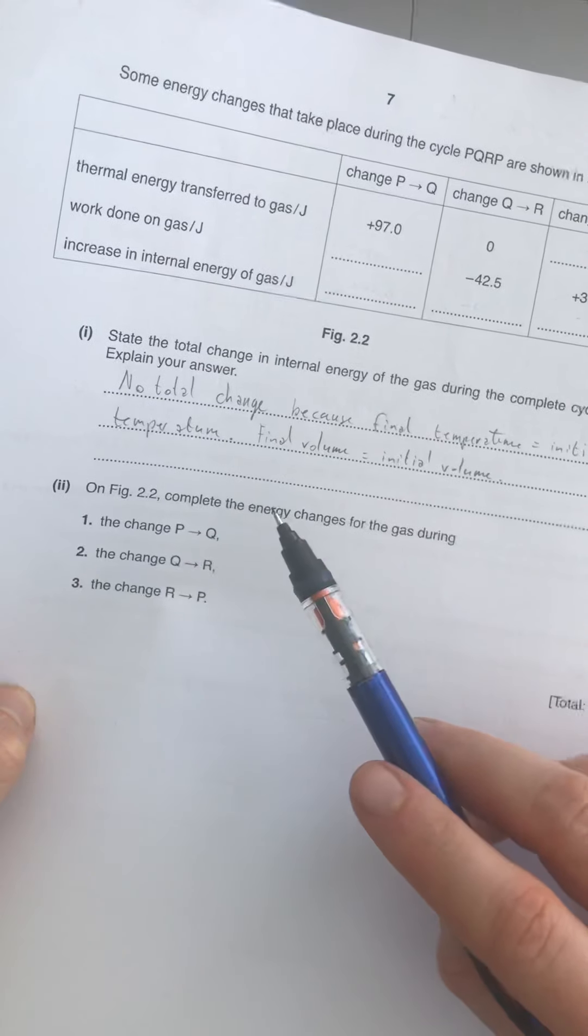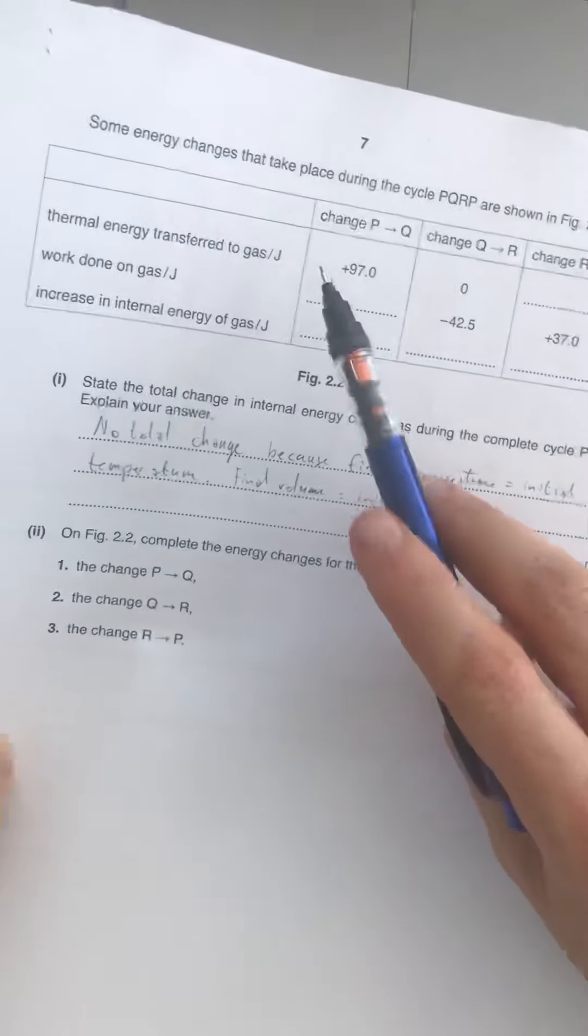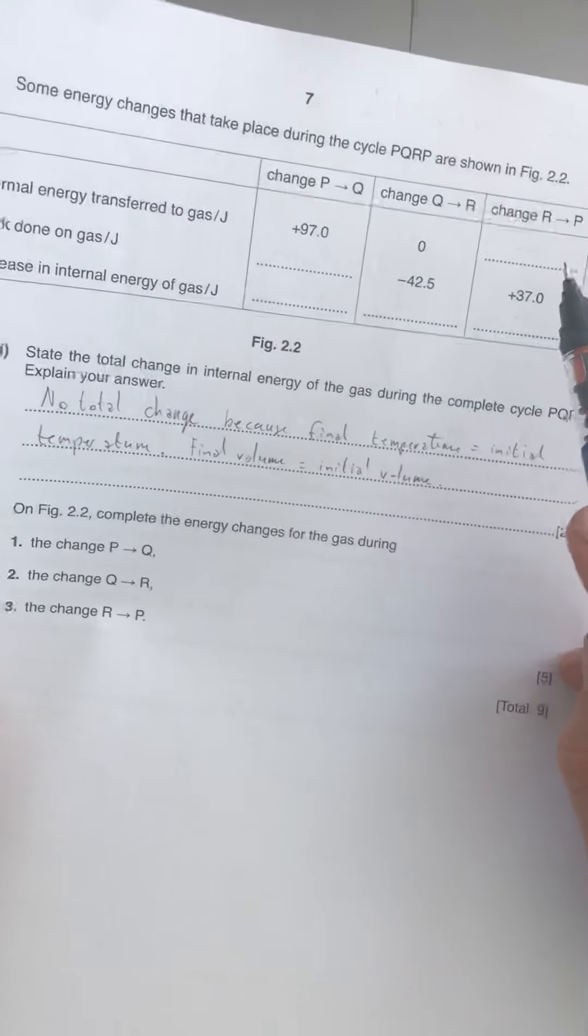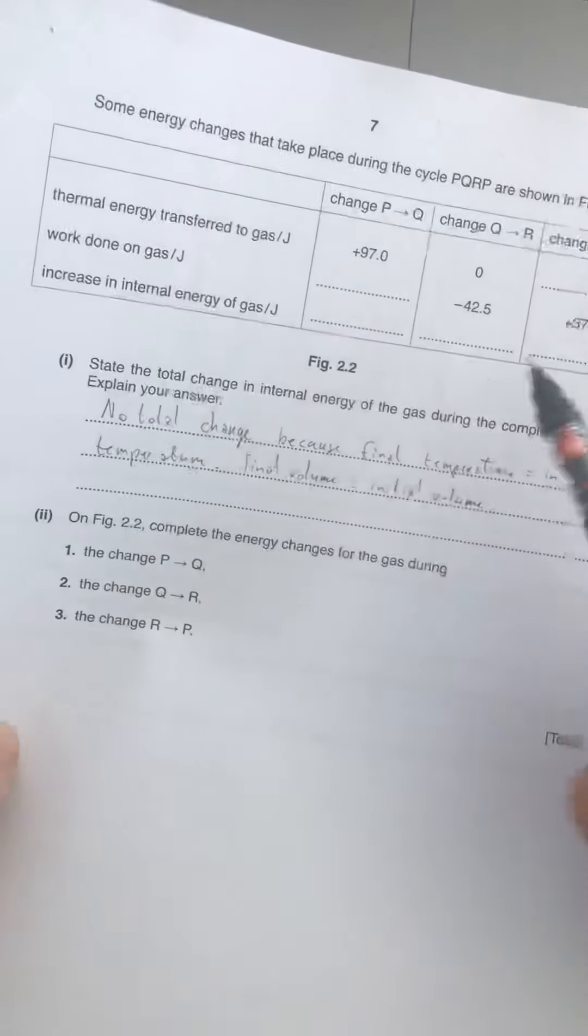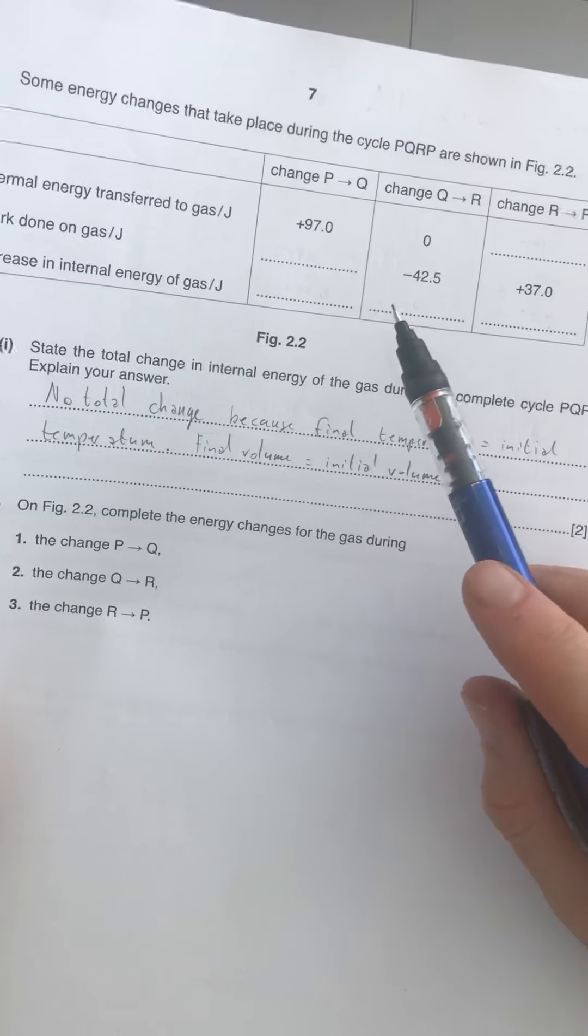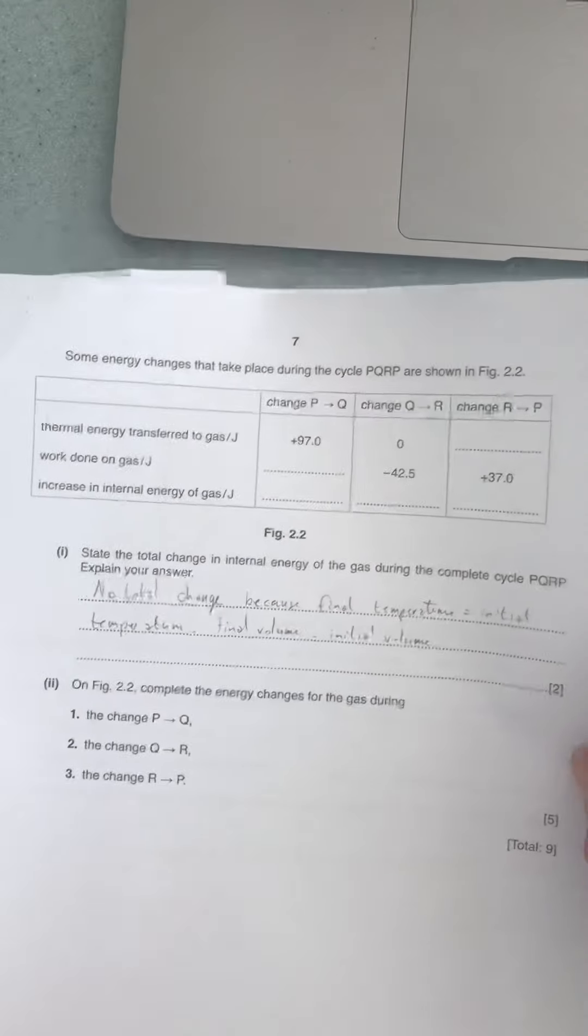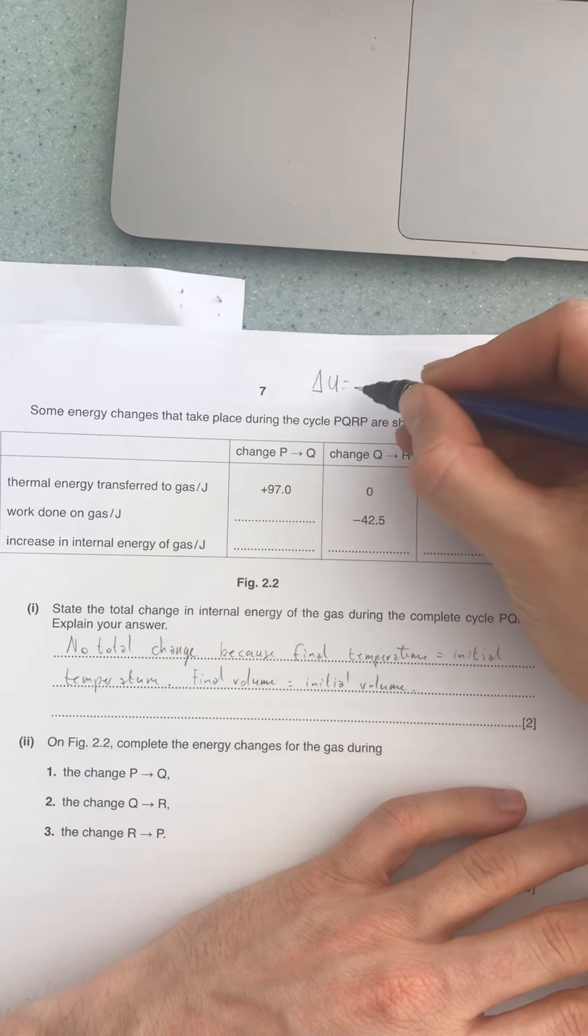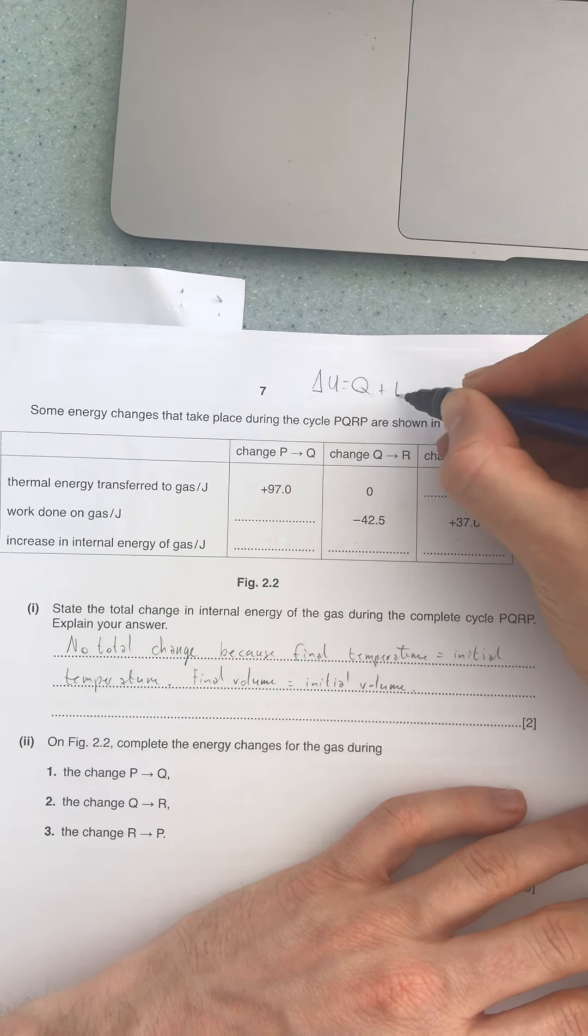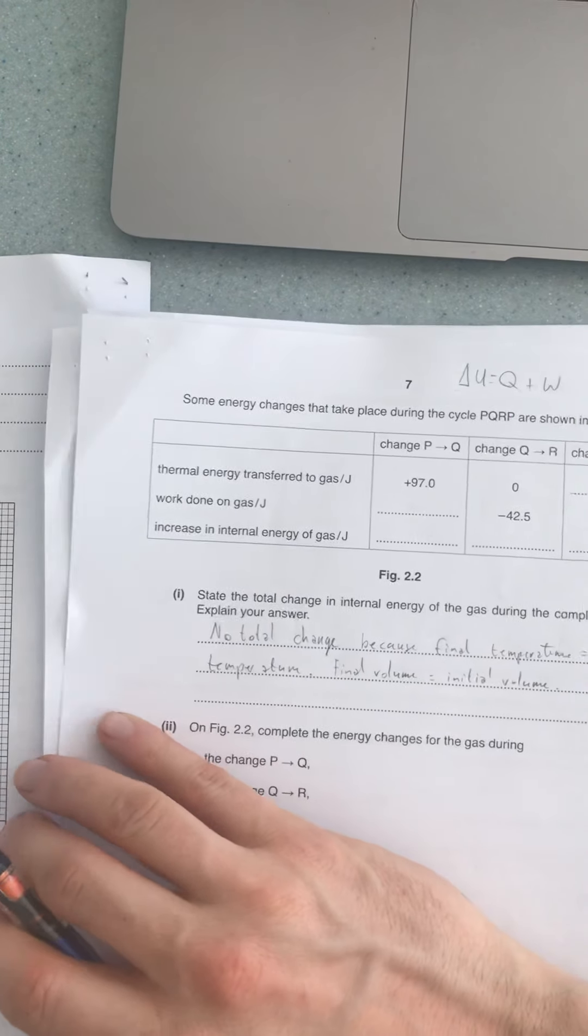Now here you've got another one. It tells us on Figure 2.2 complete the energy changes for the gas during changes P to Q, Q to R, and R to P. By answering this, just by looking at the graph, we are quite a lot towards answering this here, but it's not super easy. Let's first of all look at this. If we keep in mind that principle, the change of internal energy is equal to the heat applied plus the work done. If we look at change P to Q...